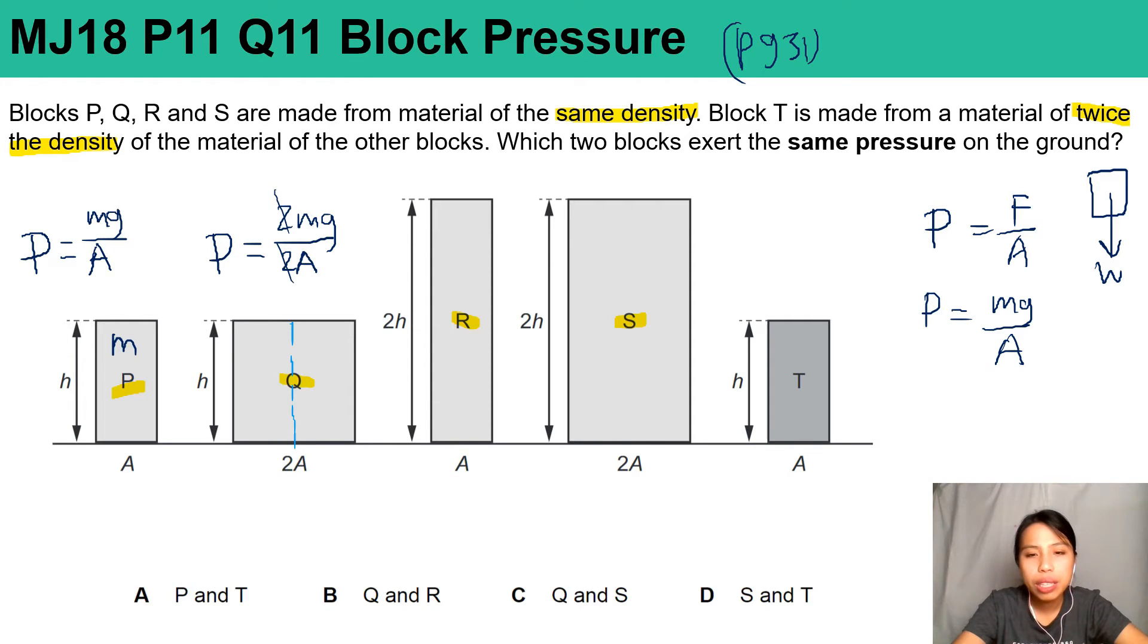But there is no answer that says P and Q. Does that mean it's wrong? No, they just want you to think about the other blocks. So we can't say P and Q because although it's correct, we don't have a choice for it.